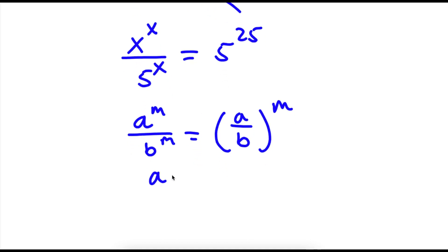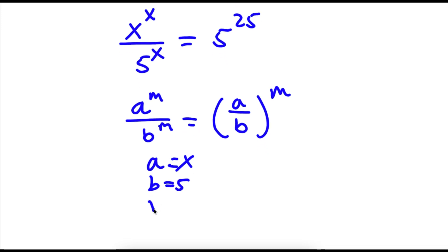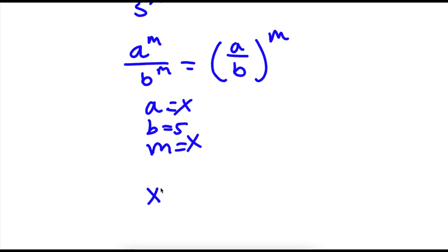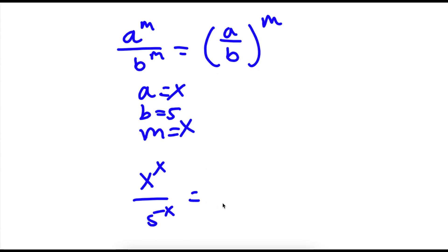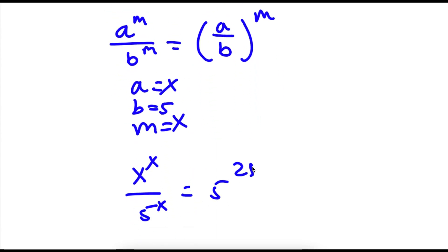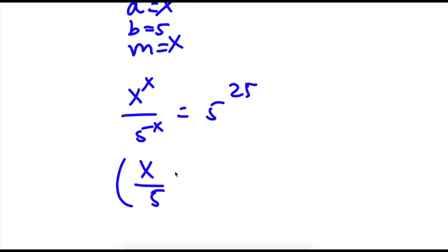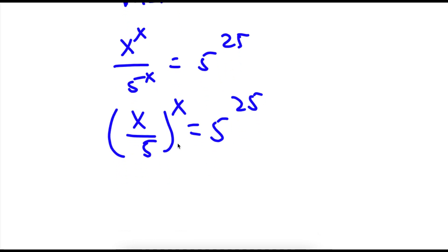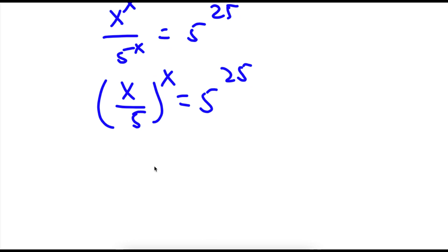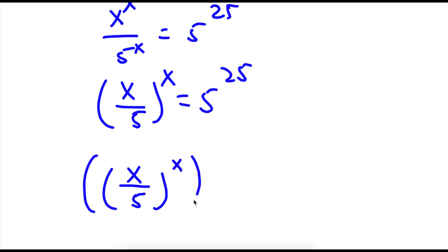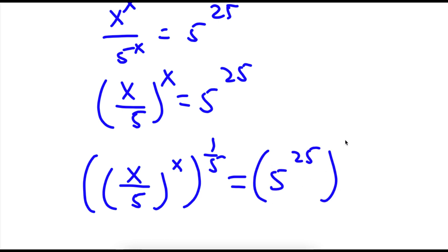So in this case, a would equal x, b would equal 5, and m would also equal x. So from x to the power of x over 5 to the power of x is equal to 5 to the power of 25, we write this as x over 5 to the power of x is equal to 5 to the power of 25. Now if I take the power of 1 over 5 on both sides, I get x over 5 to the power of x to the power of 1 over 5 is equal to 5 to the power of 25 to the power of 1 over 5.